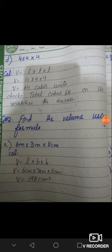Same as 4 multiplied by 4 multiplied by 4. We have a formula to calculate L multiplied by W multiplied by H. 4 multiplied by 4 multiplied by 4 equals 64 cubic units. Check: total cubes are 64. So it matches the answer. Find the volume using the formula.